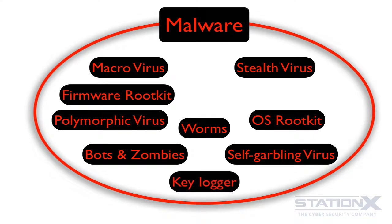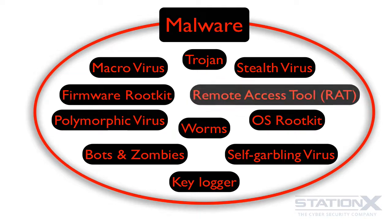You have keyloggers — keyloggers do as they sound: they log your keystrokes. And there are Trojan horses, which are simply programs that appear to be one thing but are actually malware. So you download a piece of software, it acts as that software, but at the same time it is also running malware in the background.